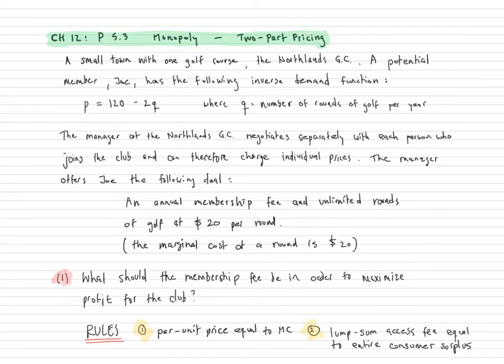Two-part pricing is what stores like Costco or Sam's Club use, where you have to pay a membership fee upfront and then you're able to purchase the product at a reduced price. So the question then is what price should we charge for the goods and what should the membership fee be in order to maximize profit?